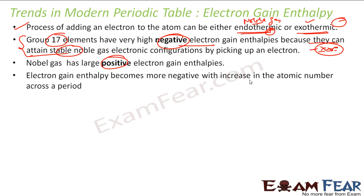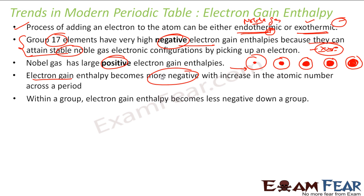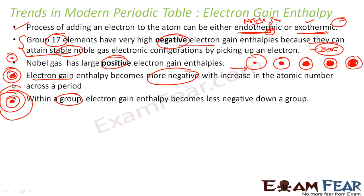Electron gain enthalpy becomes more negative with increase in atomic number across a period, because the atomic size decreases and the nuclear charge increases, giving the nucleus more capability to attract external electrons, so the energy released increases. In a group, it becomes less negative going down because the number of shells increases, size increases, and the nucleus's capability to attract external electrons decreases.